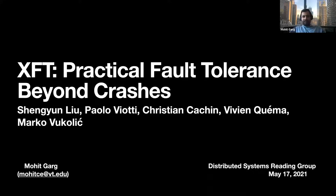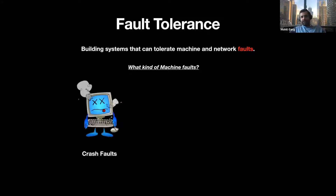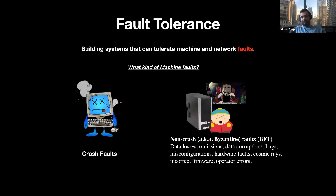Let's start with what we mean when we talk about fault tolerance. For high availability, we are trying to build systems that can tolerate machine and network faults. What kind of machine faults? We usually consider the fail-stop model, where any fault is deemed as total loss — these are crash faults, where we assume the machine just stops working completely. This works fine in practice until it doesn't. There is a whole gamut of data losses, omissions, data corruption, software bugs, etc., where we can pragmatically assume total loss.